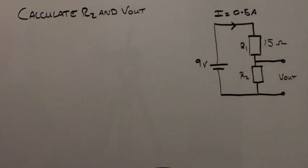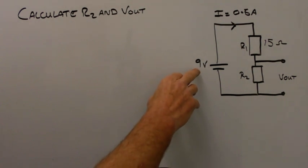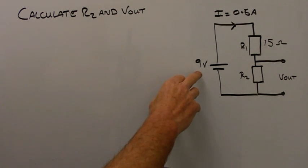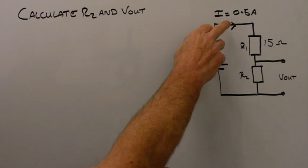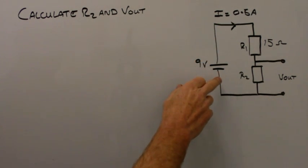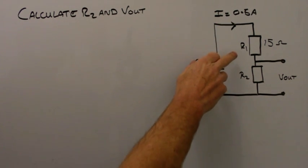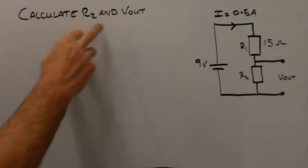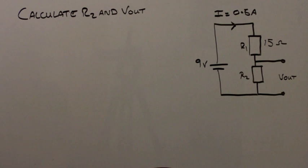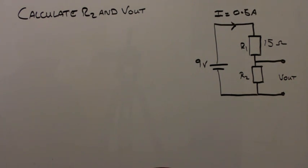We have another problem where we have a 9 volt supply with a current of 0.5 amps flowing through the circuit. R1 has a value of 15 ohms, and again we are asked to calculate the value of R2 and Vout. Stop the video, have a go at the problem yourself, and I'll come back in a couple of minutes and work through the problem with you.